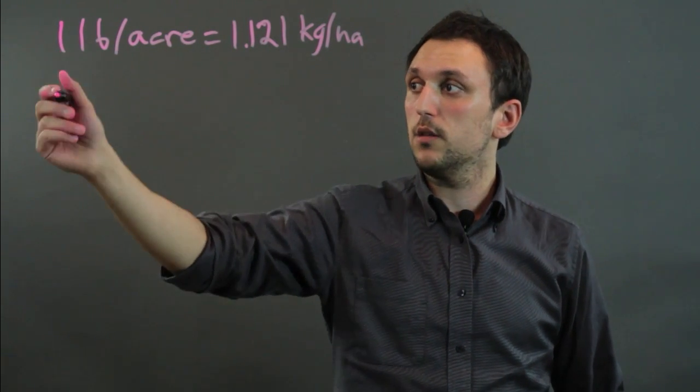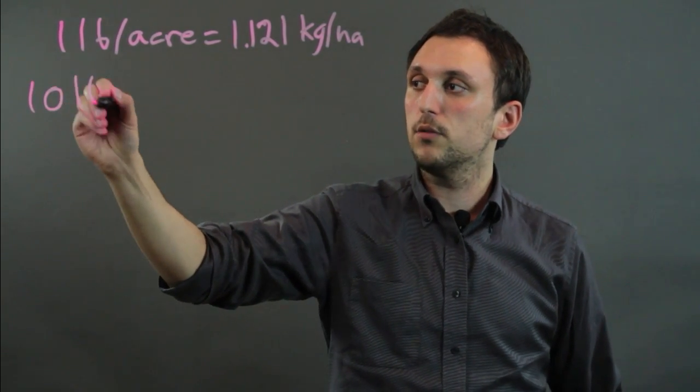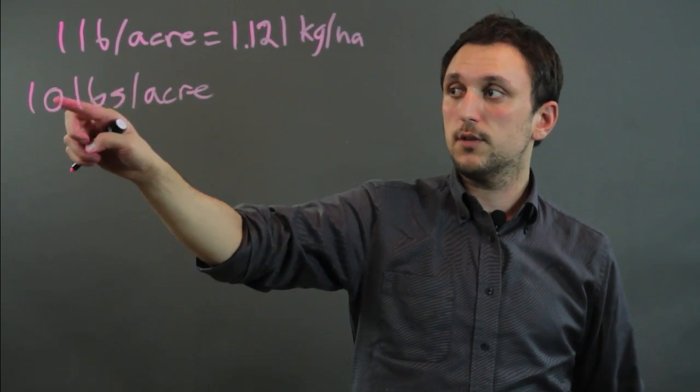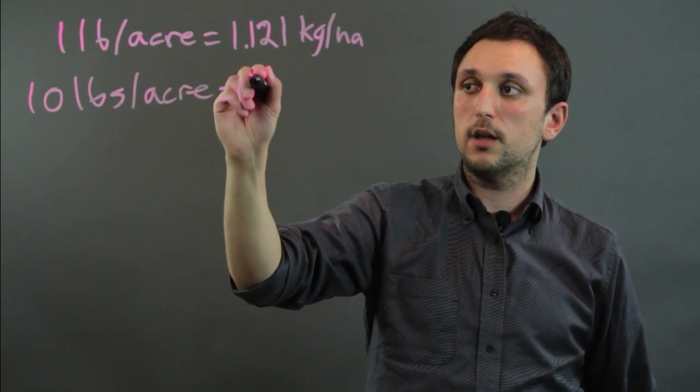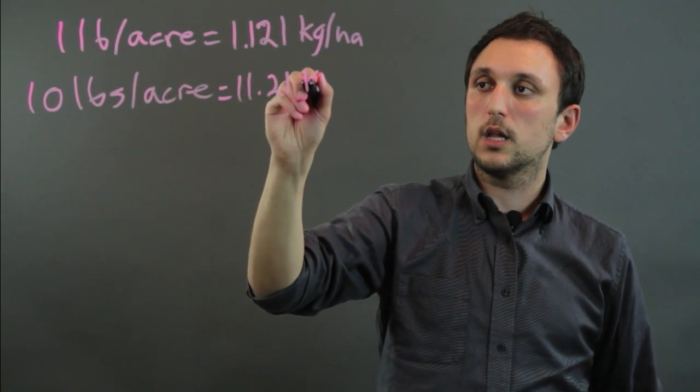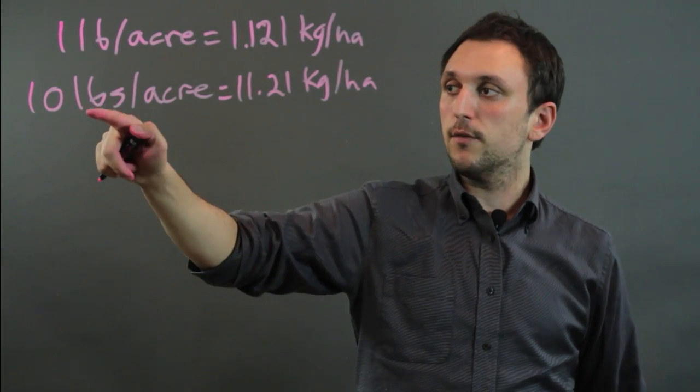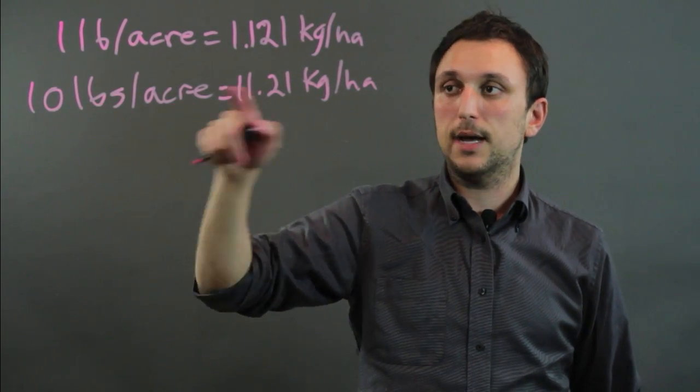Now if we wanted to actually do it out, we can say let's say we're dealing with 10 pounds per acre. Well that should be times 10, that should be about 11.21 kilograms per hectare. So the way we would figure it out is we convert acres to hectares and then pounds to kilograms.